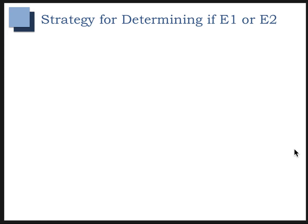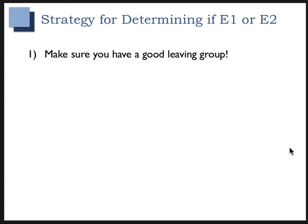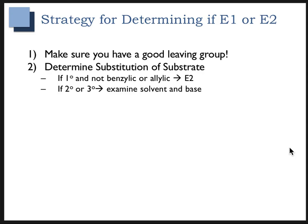The first step is to check and make sure that you have a good leaving group. You're also going to want to determine the substitution of the substrate. If it's primary and it's not benzylic or allylic, it's easily E2. And if it's secondary or tertiary, we have to look at the other factors.